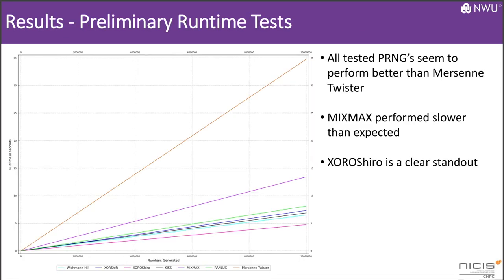For the number generation test, we see that all of the identified algorithms seem to perform faster than Mersenne Twister, with Xoshiro being a standout and MixMax performing slower than expected. Next fastest was Wichmann-Hill, KISS, and XORshift, with them all being relatively close to each other.